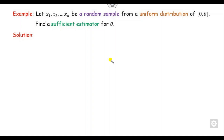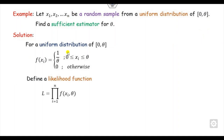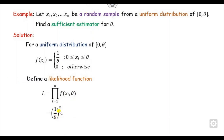Now let's look at a numerical example. Given a uniform distribution, we have to find whether the sufficient estimator exists. The PDF of the uniform distribution on [0, theta] is 1/theta. Step 1: start with the likelihood function. Substituting the PDF, we get the product from i=1 to n of 1/theta, which simplifies to 1/theta^n.